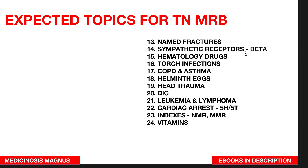Sympathetic receptors — mainly the beta receptors and alpha receptors in pharmacology. Hematology drugs, TORCH infections in pregnancy, COPD, asthma, alimentary tract conditions, head trauma and the different types of CT scan findings in head trauma, DIC, leukemia, lymphoma, and cardiac arrest — specifically the reversible causes.